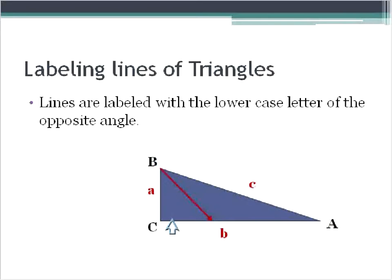When you have a triangle A, B, C, the line labels are going to be the opposite of the angles and in lower case. So for example, this is angle B, so this line would be line lower case b.